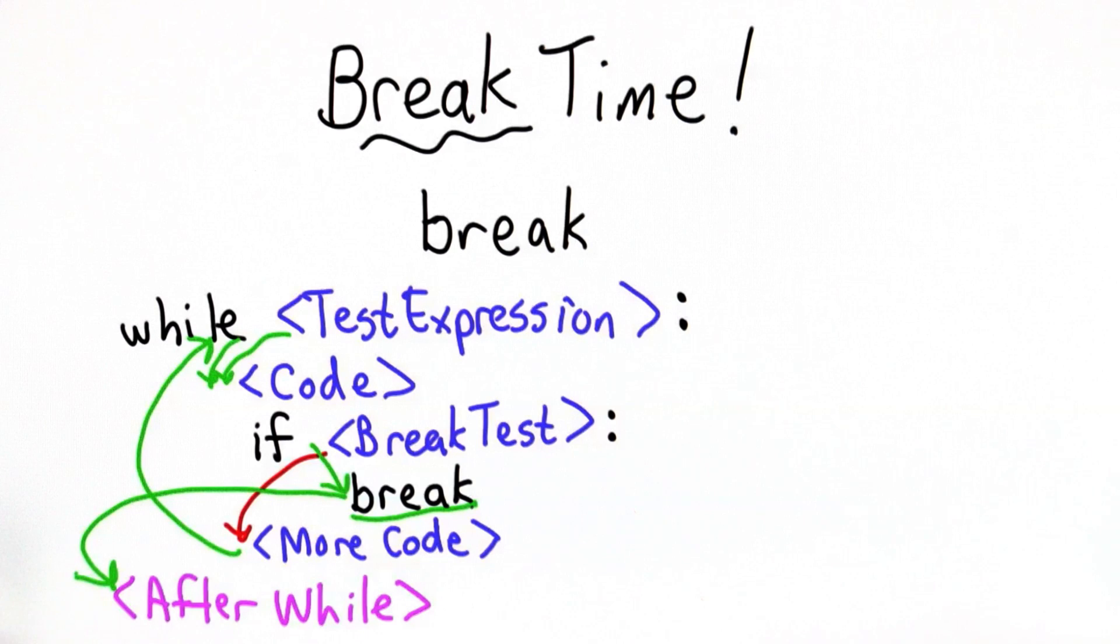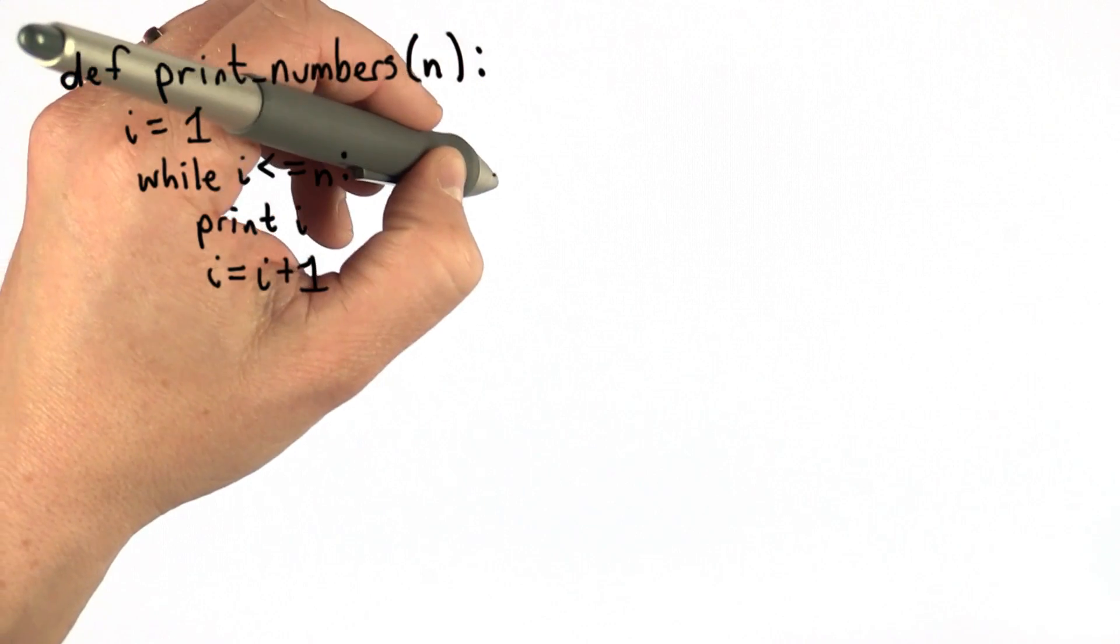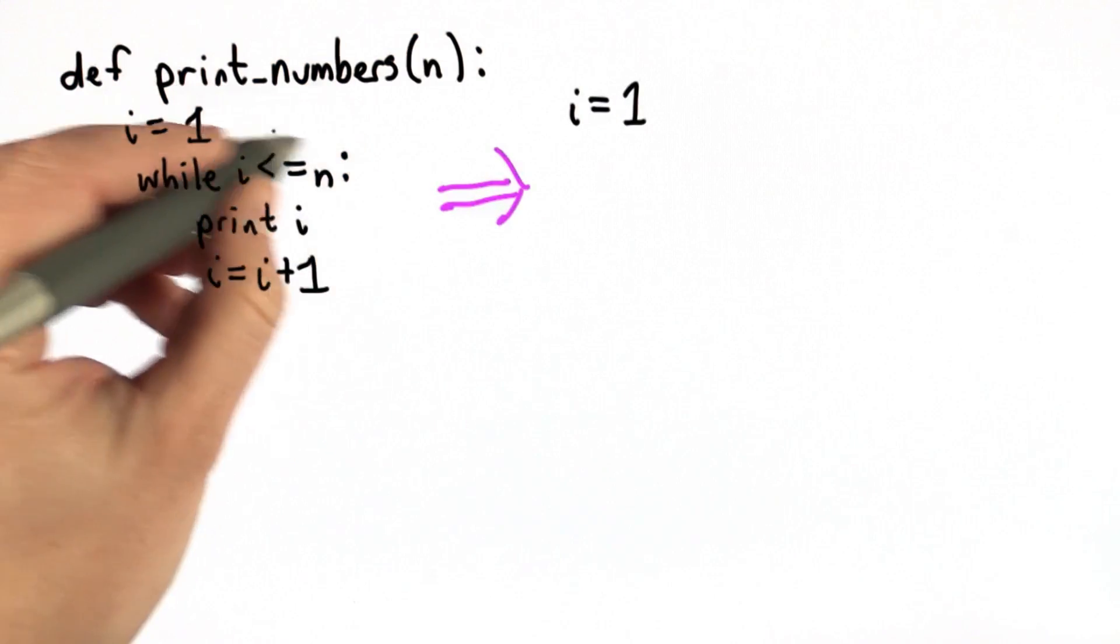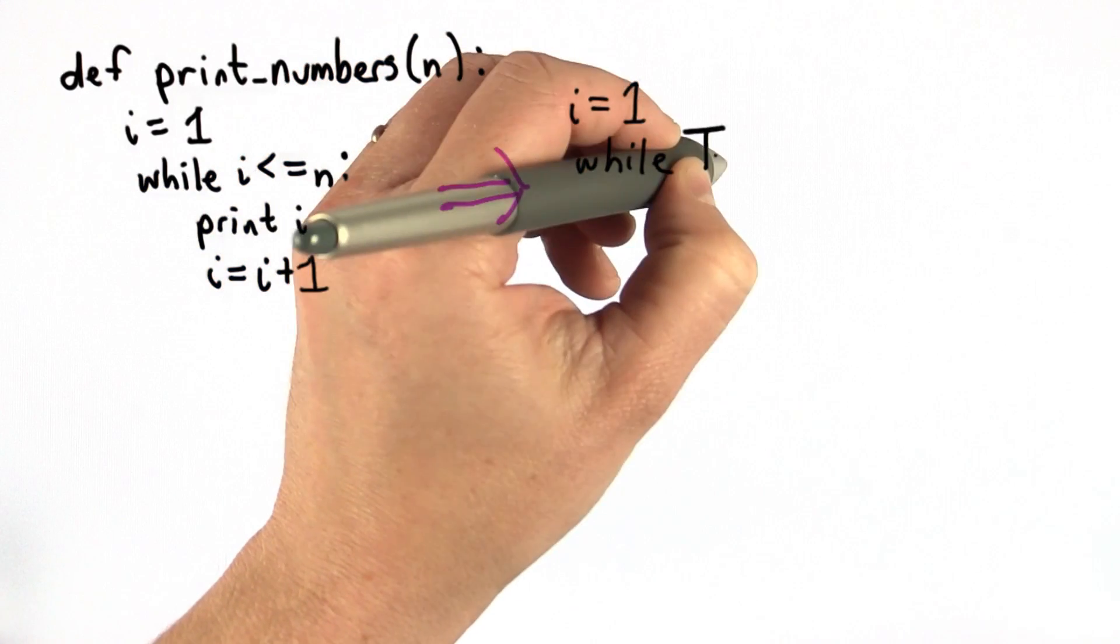Here's an example of how we might use that. Before we defined the procedure print_numbers without using break. We could rewrite that using break. Now instead of having the while test stop the loop, we'll make the while test true. True will never become false.